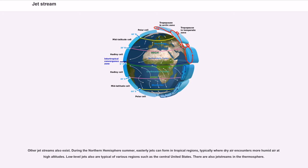Other jet streams also exist. During the Northern Hemisphere summer, easterly jets can form in tropical regions, typically where dry air encounters more humid air at high altitudes. Low-level jets are typical of various regions such as the central United States. There are also jet streams in the thermosphere.